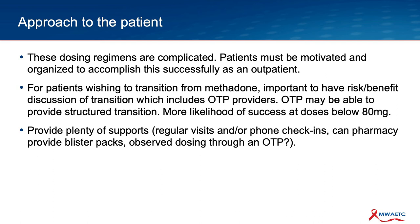At Evergreen Treatment Services Opioid Treatment Program here in Seattle, we generally try to get people to around 80 milligrams before making this transition. Most importantly, you want to provide plenty of supports — regular visits or phone check-ins to make sure they're able to adhere and understand the instructions. Can the pharmacy provide blister packs? There was a published study that showed they were able to partner with a pharmacy to do that. We're in discussions with some of our pharmacies but haven't yet been able to provide blister packs. Or can they get their dosing observed through an OTP?